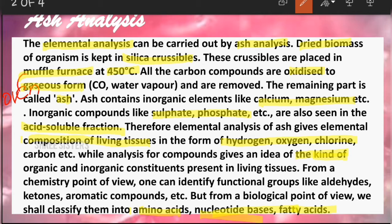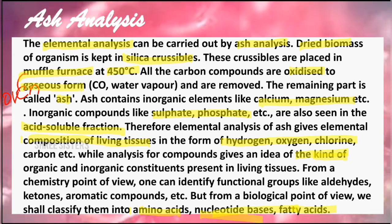In summary, ash analysis is nothing but elemental analysis of living tissue. The dried biomass is kept in silica crucibles, placed in a muffled furnace at 450 degrees, and all carbon compounds are converted to gas and removed. The remaining part is called ash, which contains organic and inorganic components, giving us the composition of living tissue.